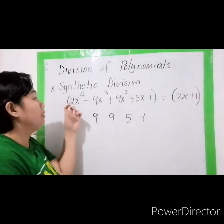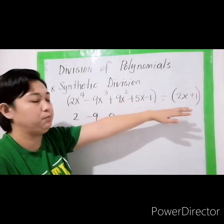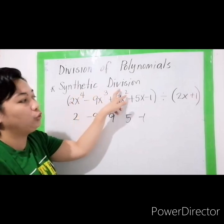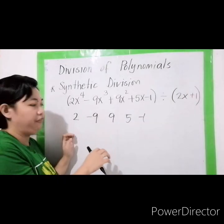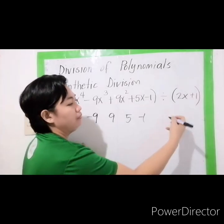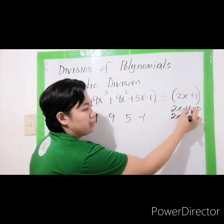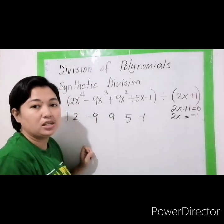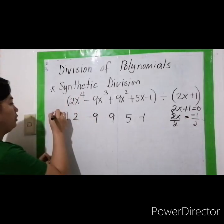Let's have question number 3. You have 2x raised to 4 minus 9x cubed plus 9x squared plus 5x minus 1 divided by 2x plus 1. The exponents are complete: highest is 4, with 3, 2, 1, and constant all present. For the divisor: 2x plus 1 equals 0. Transpose positive 1 to the other side to get negative 1. Since x has a coefficient of 2, we divide both sides by 2. Therefore, x is negative one-half.